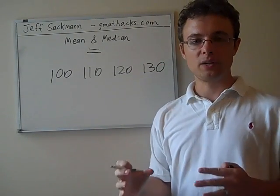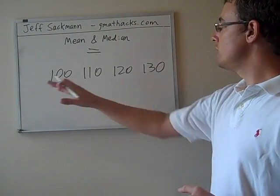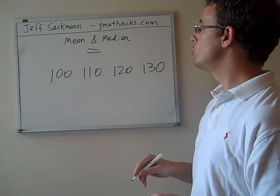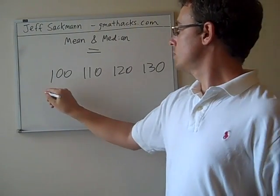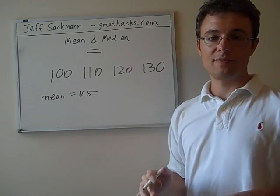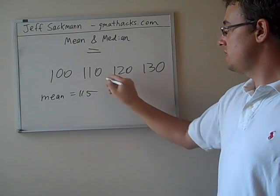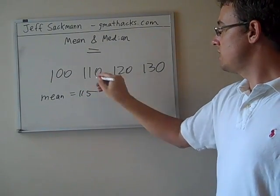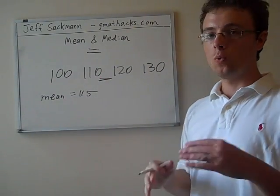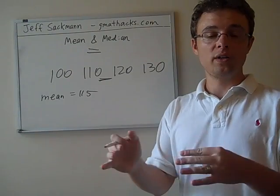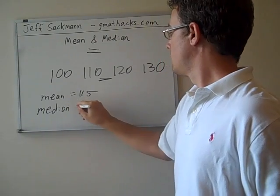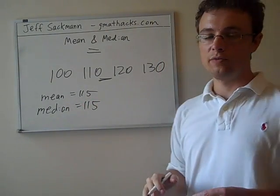They're consecutive in the sense that they're all spaced apart by the same amount, by tens. So if we average them all out, we don't need to go through the math right now, but you can do it if you don't believe me. Adding them up, dividing by four, the mean works out to 115. And the median, this is something I haven't showed you yet, if you have an even number of terms in the set, the median should be right in here, in between the 110 and the 120. And that's exactly what we do. We take the two middle terms, 110 and 120, and average them. So 110 plus 120 divided by 2, that means our median is also 115.